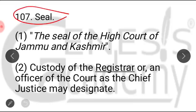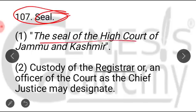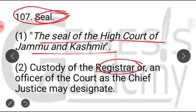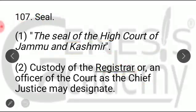Section 107 deals with the seal of the J&K High Court. The High Court of Jammu and Kashmir should have a seal which contains the name of the High Court of Jammu and Kashmir. This seal should be kept in the custody of the Registrar of J&K High Court or any officer of the court as the Chief Justice may designate.